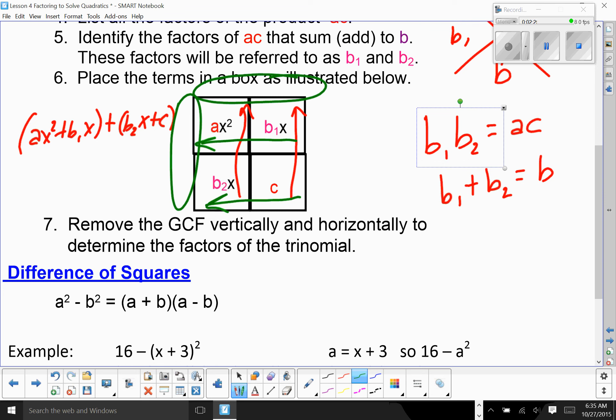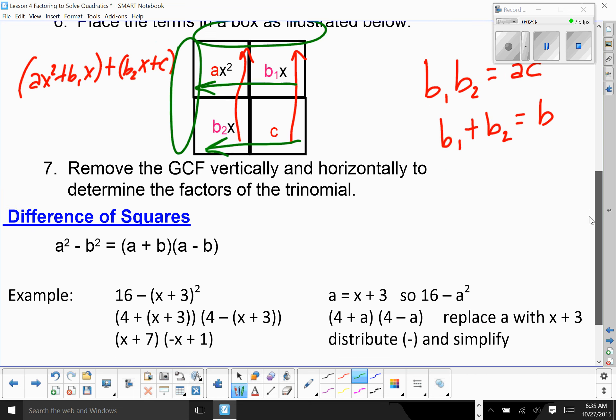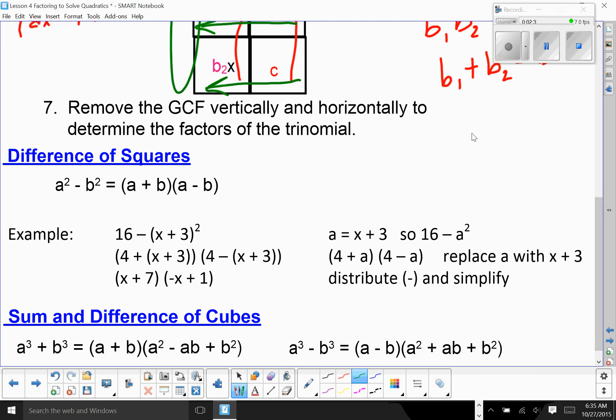When I say final answer, you've got to look at them again to see if the two terms are a difference of squares or a sum or a difference of cubes. A difference of squares is a pattern. A squared minus B squared is equal to A plus B times A minus B.